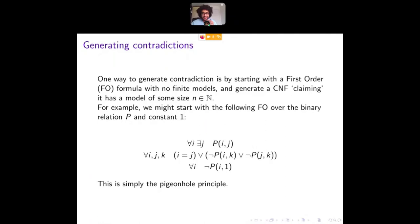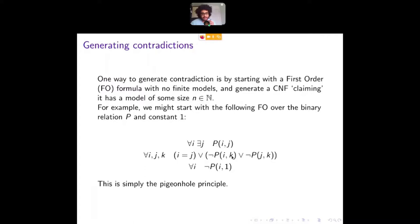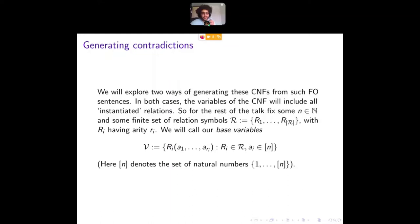So how do we generate a CNF from this thing? Well, we have to pick our variables and eliminate these quantifiers. So we're going to pick some natural number N and we're going to create these so-called base variables. In general, the first order formula is going to be over a bunch of relations, each of their arities. So this one, there's only one relation, this P relation of arity two, but in general, there may be more relations with different arities. And our base variables are somehow all of the instantiated relations. So it's all the relations with all the possible inputs to its arity, where we're drawing the inputs from N because we're making a CNF that claims that this thing has a model of size N. So these are our base variables that we start with, and we'll create some more variables as we eliminate the quantifiers.